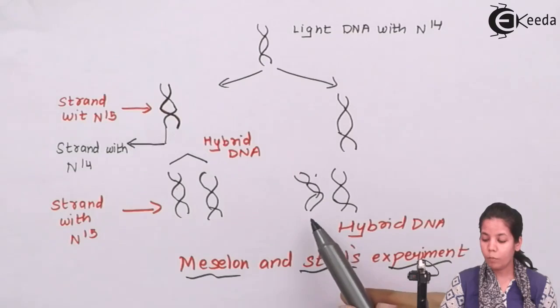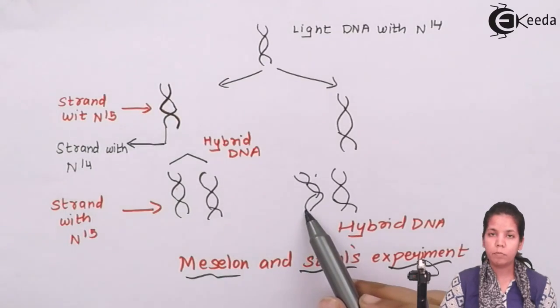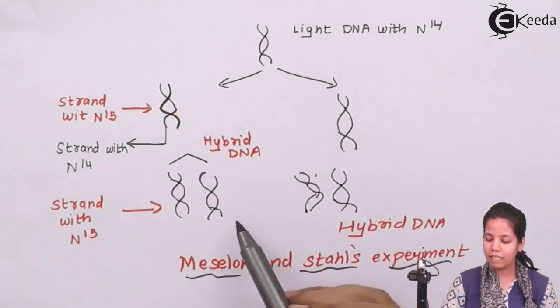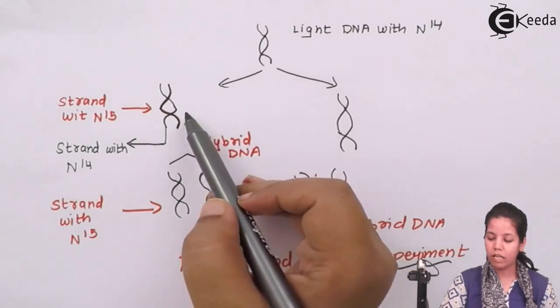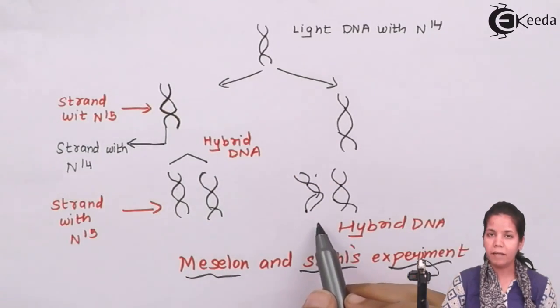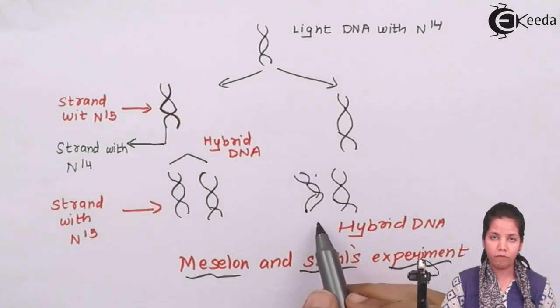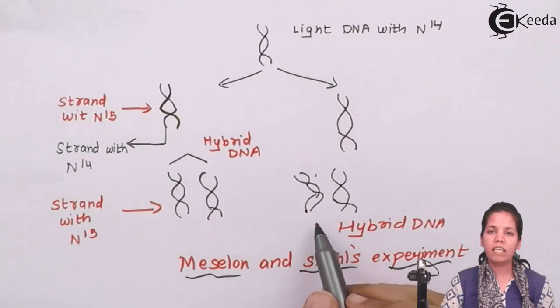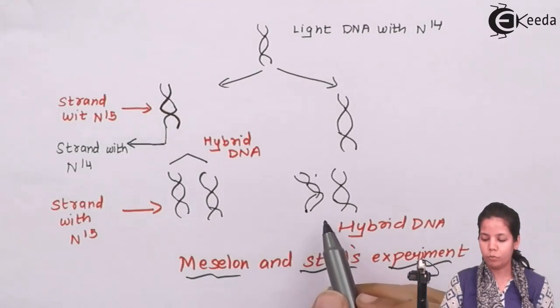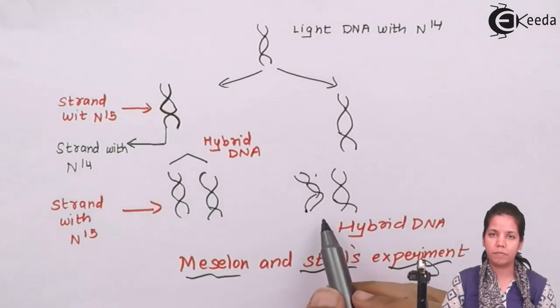This hybrid DNA has both the strands. One strand was made up of N14 whereas another strand was made up of N15. The parental strands that were present initially had only N14 and N15. As you observed, hybrid DNA had both N15 and N14, and once the E. coli produced its progeny or daughter cells, this hybrid DNA could be observed in Meselson and Stahl's experiment.